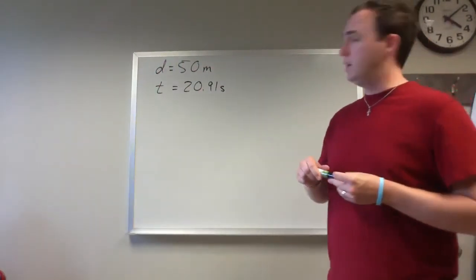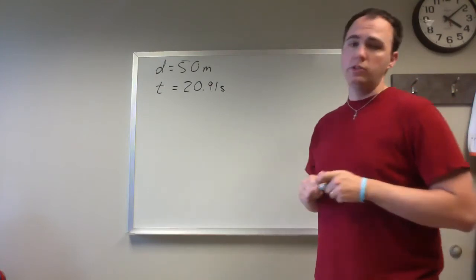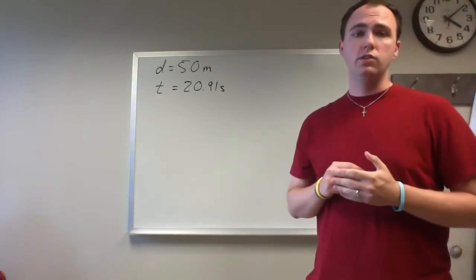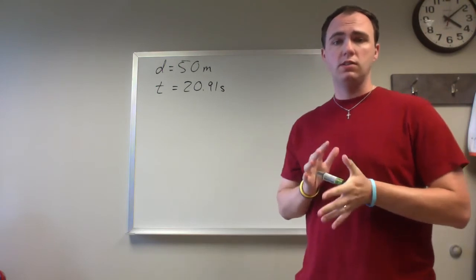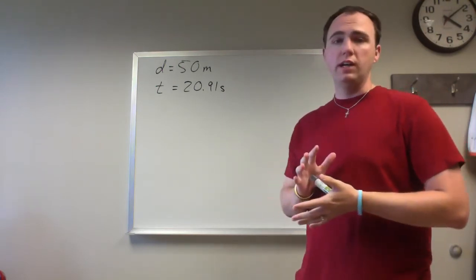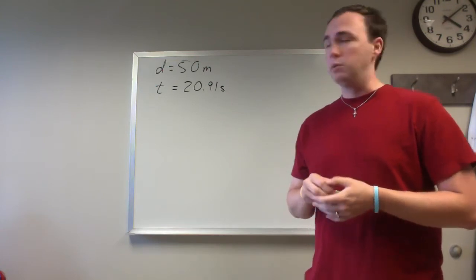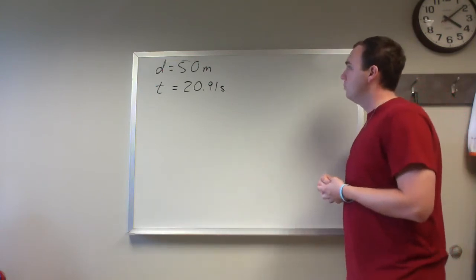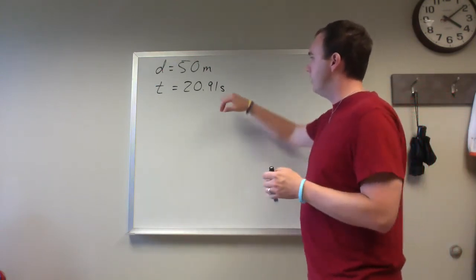All right, so in our in-class discussion we were talking about using significant figures as a measurement of uncertainty in terms of looking at Olympic swimming.